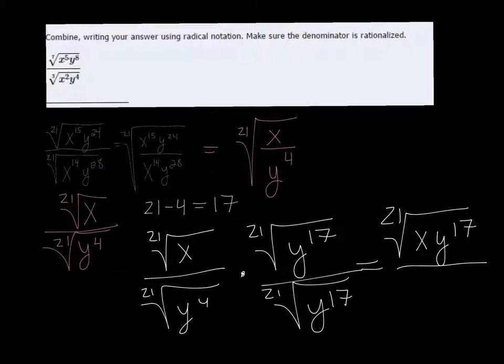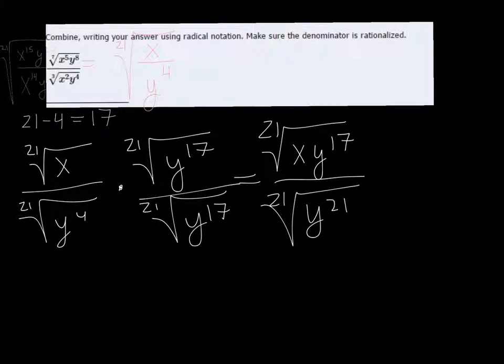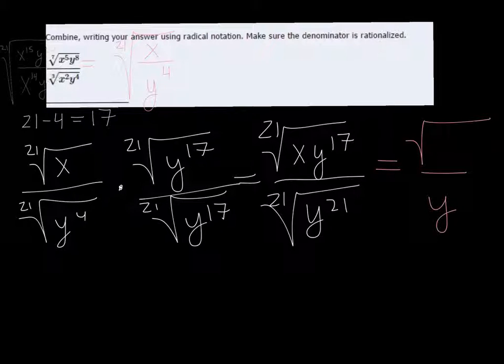In the bottom I get the 21st root of y to the 21st, which is exactly what we wanted, because now I can cancel those 21st and just get a y on the bottom and the top remains a radical.